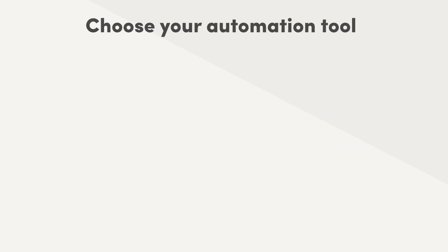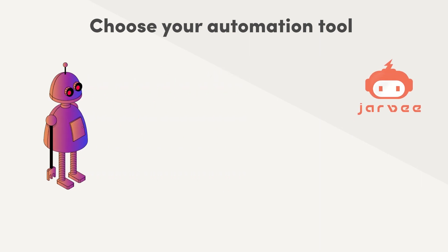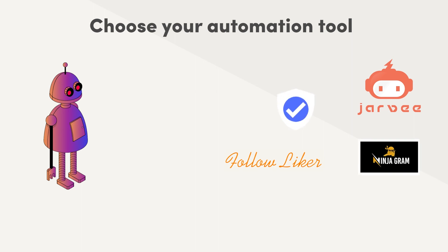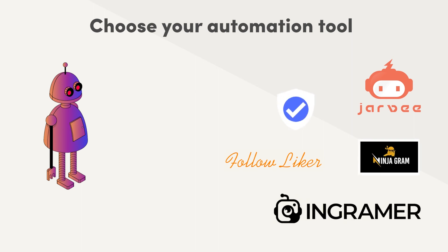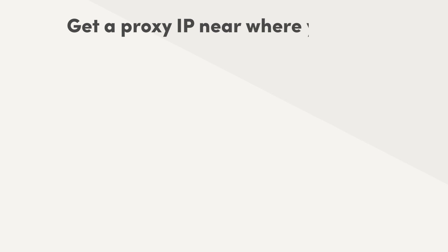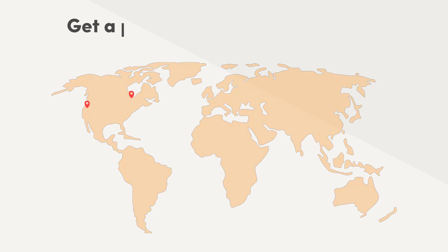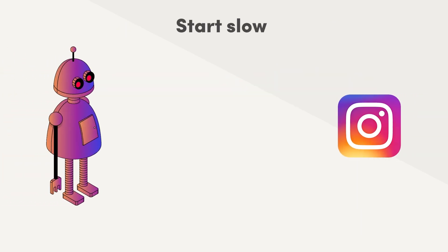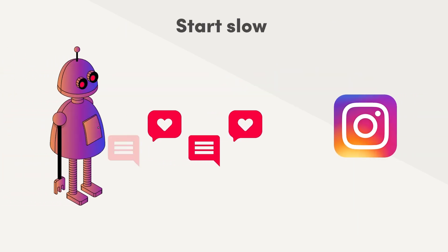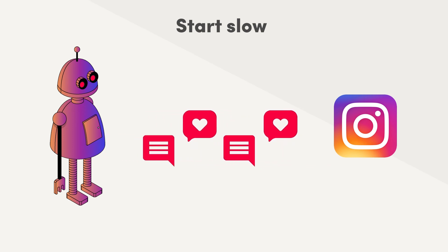Choose your automation tool — there are many different Instagram bots out there. Javi is always a popular pick, but you can also get FollowLiker, StoryVoter, Ninjagram, or Instagram StoryViewer, to name a few. Instagram automation software is as important, or even more important, than proxies. Also, some Instagram automation experts advise getting a proxy IP near where you live. Start slow — if you're growing Instagram accounts, let them warm up for a while before you do anything with them. Then gradually start increasing the number of follows.